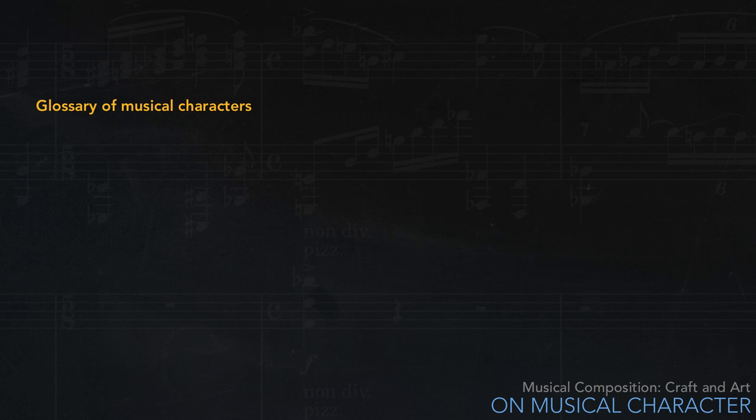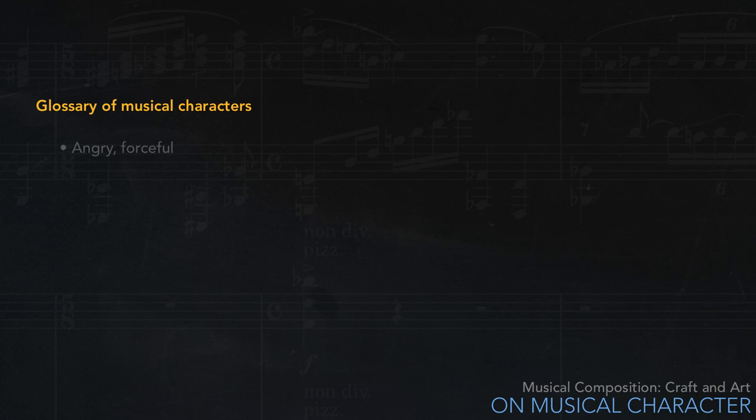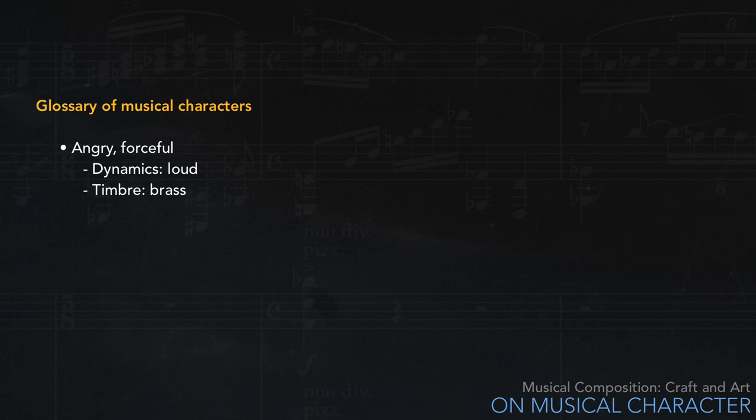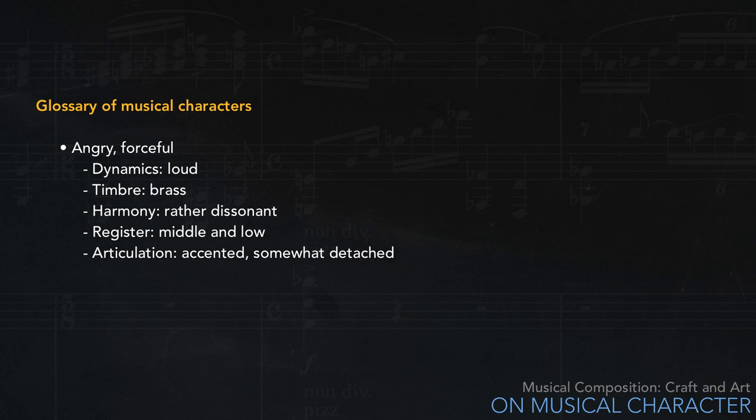One idea I often suggest to students, especially those interested in film music, is that they start by making a glossary of musical characters, including all the aspects of the music that can be relevant. As an example, let's think of how we create an angry, forceful character. This is pretty close to our third example above. Of course, you don't always have to use all these things at the same time, but it's a good idea to get into the habit of thinking this way.